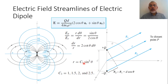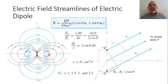By taking different values of the constant C — for example 1, 1.5, 2, and so on — we can draw the different streamlines of the electric field, plotting r = C·sin²θ for each value.